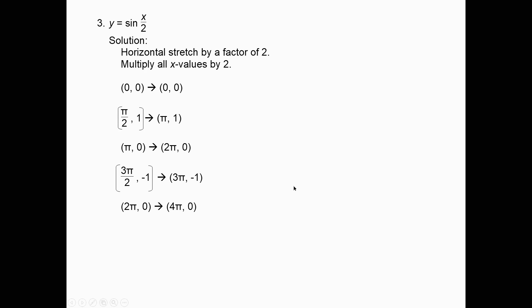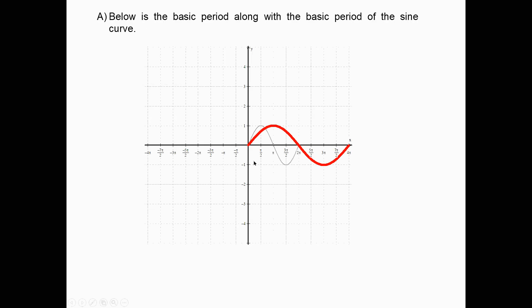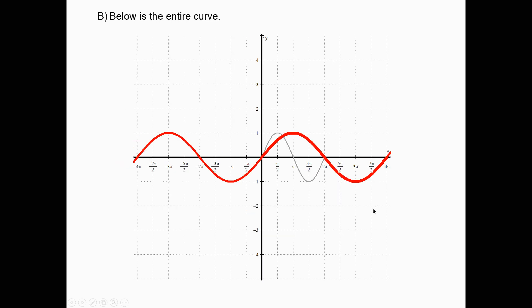Example 3: y = sin(x/2), which is the same as sin((1/2)x), so B = 1/2 — a horizontal stretch by a factor of 2. Multiply all x-values by 2. The five key sine points become (0, 0), (π, 1), (2π, 0), (3π, -1), (4π, 0). The basic period runs from 0 to 4π. Even without the axes, it still looks like the regular sine curve — it's difficult to obliterate sine and cosine.